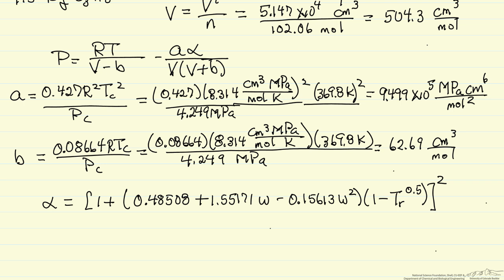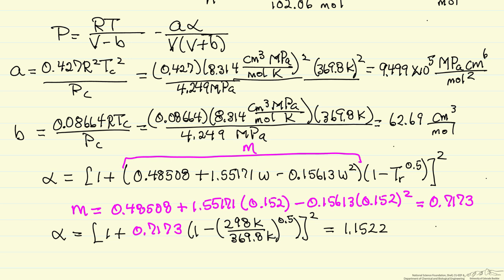The units have to be consistent when we plug back into the SRK equation. To calculate alpha, I'm going to do this in a couple steps. I'm going to call this value here m, and then I'll substitute the values in. So I calculated m, and I substitute in, and I have a value of alpha, and I should point out that this is dimensionless. So now we have the parameters to substitute back into the SRK equation of state.